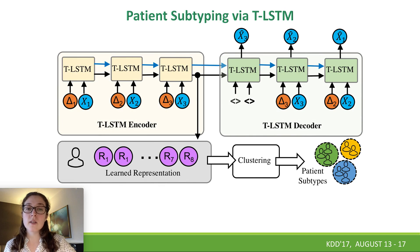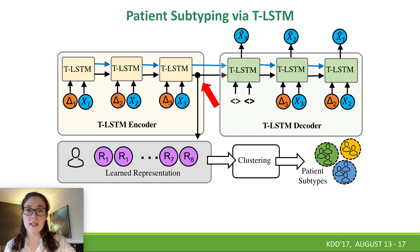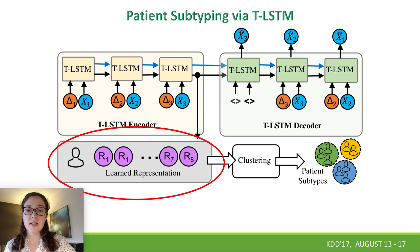Since patient subtyping is clustering of time sequences, we aim to learn a descriptive single representation of the patient record. For this purpose, we use the hidden state of the TLSTM encoder at the end of the sequence, and the learned representations are used for clustering the patients. Clustering can be done by, for instance, k-means.